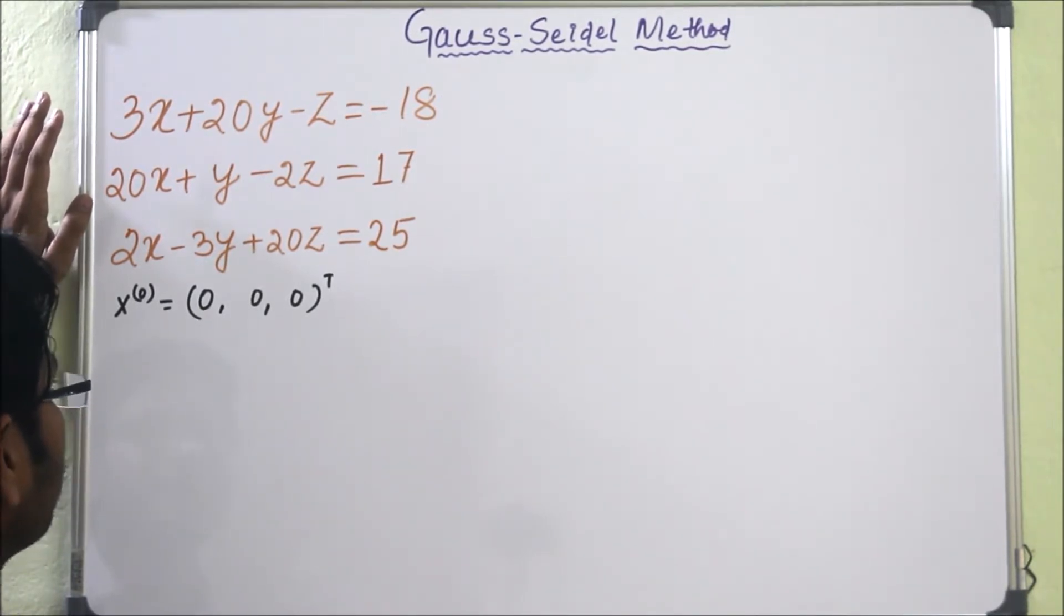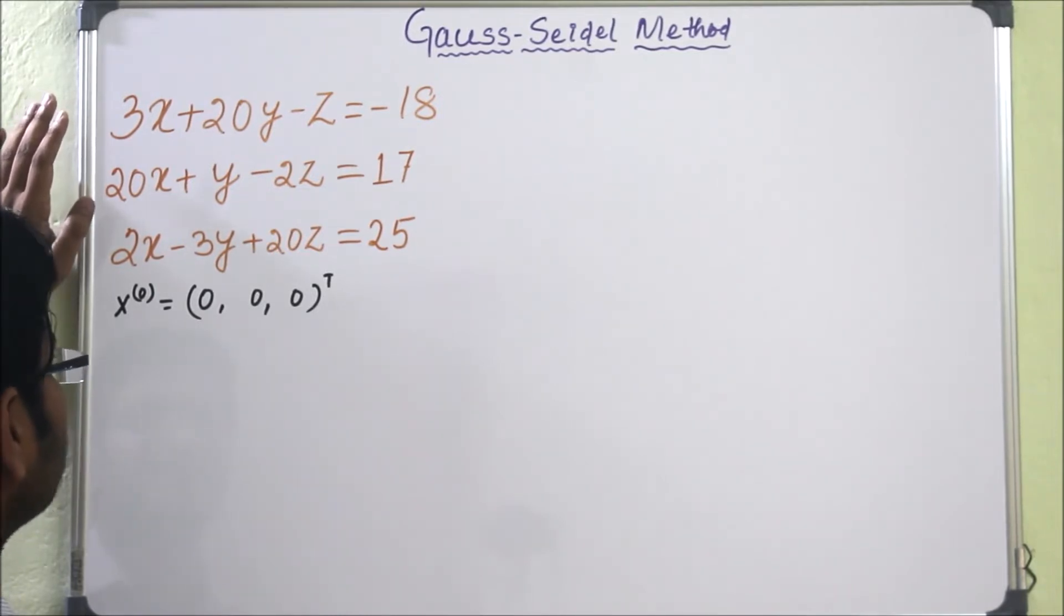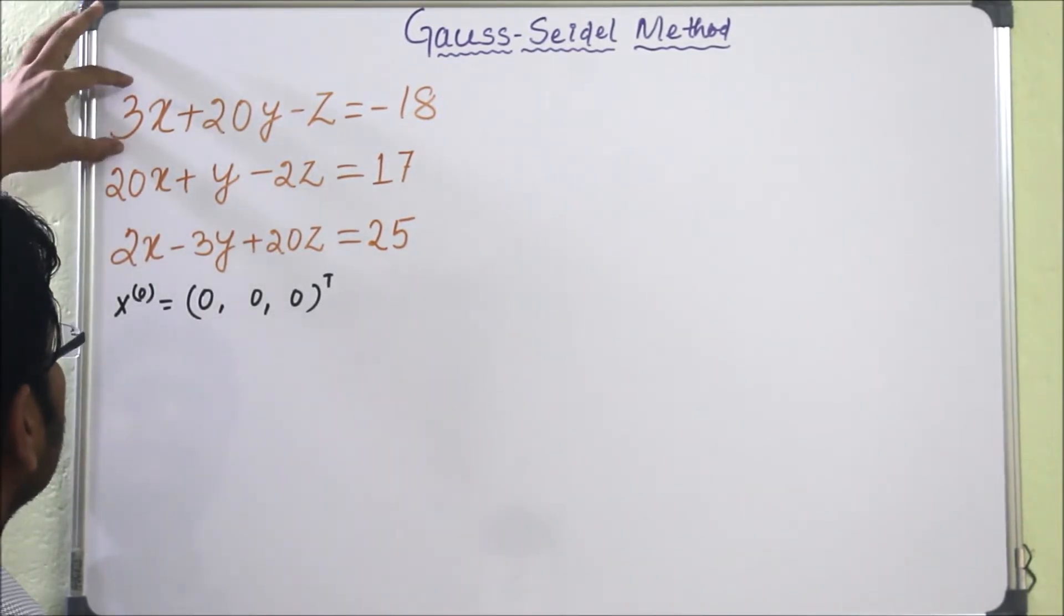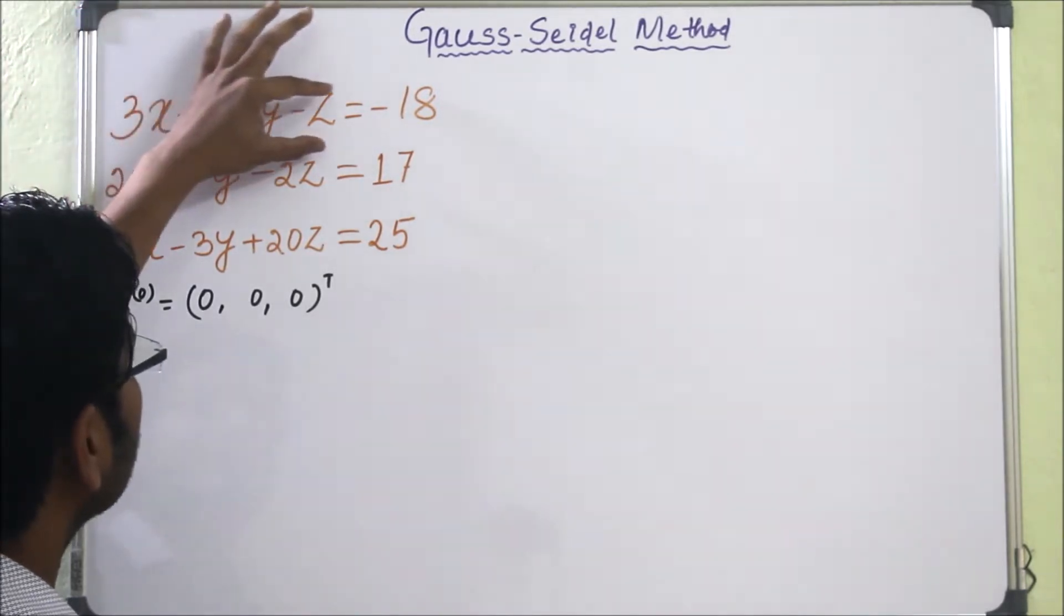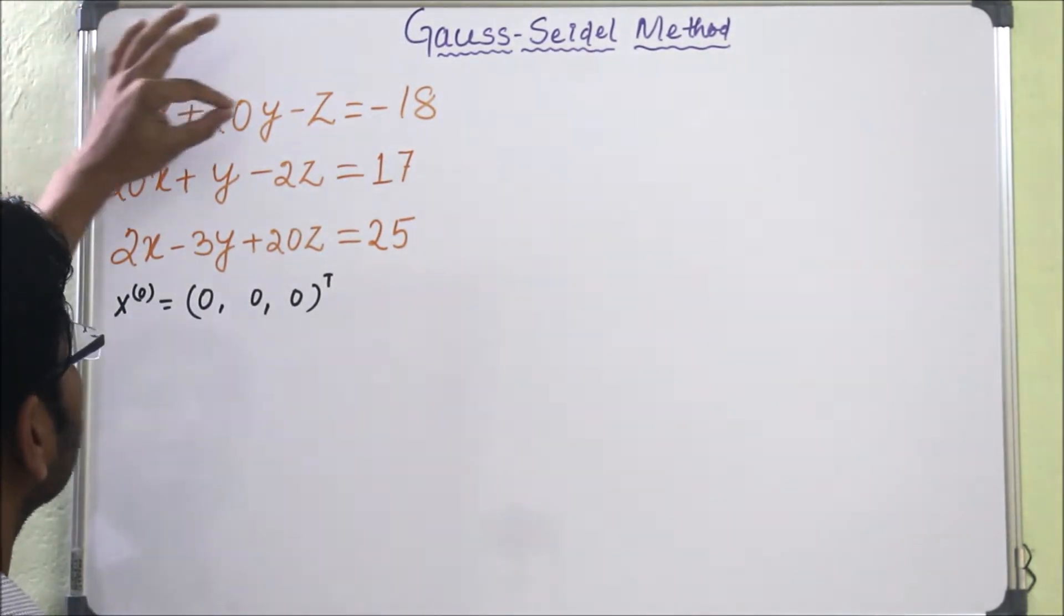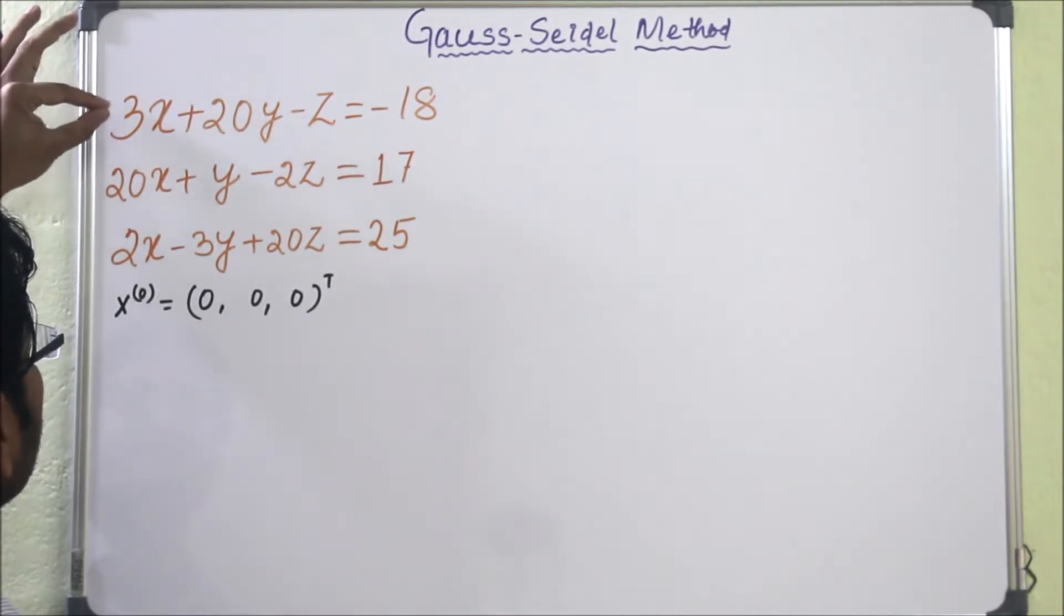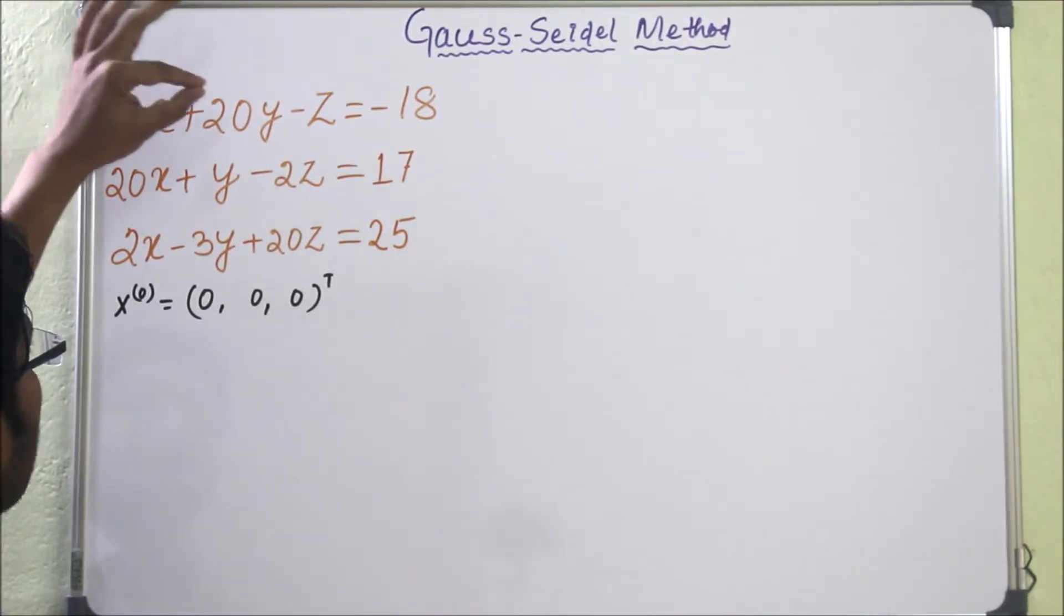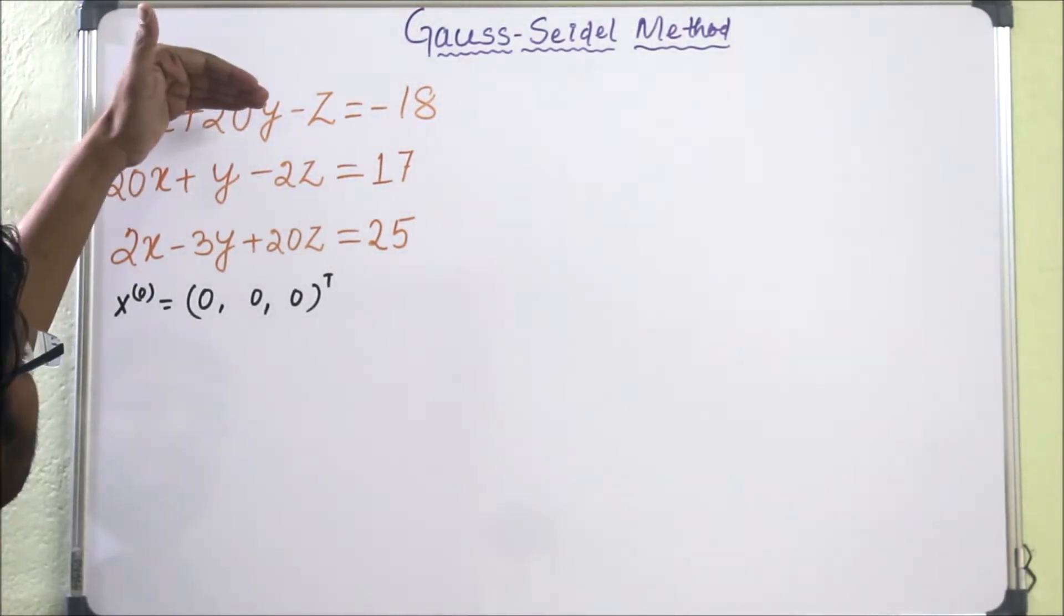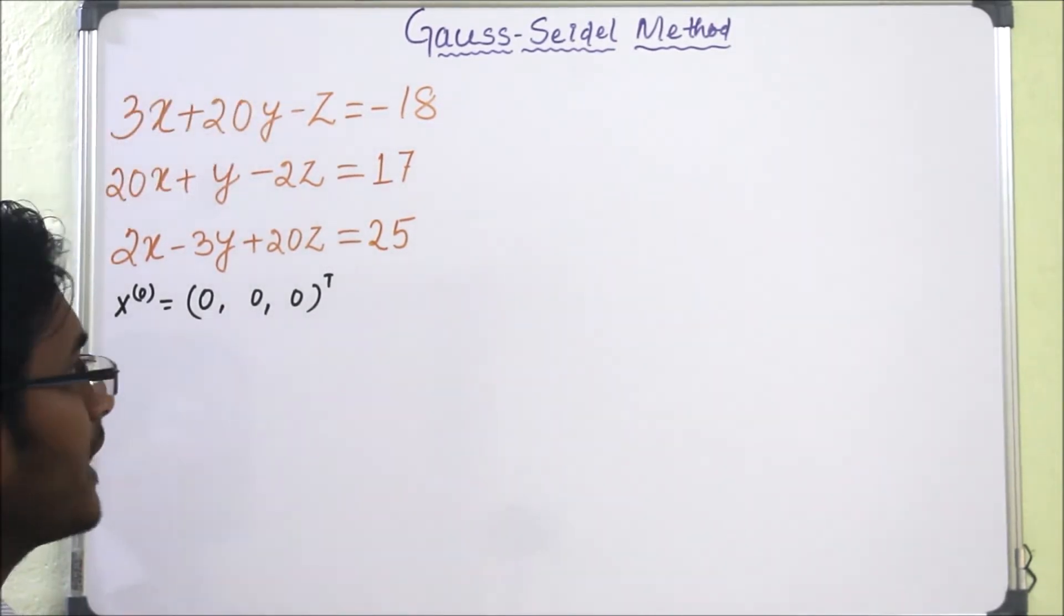How to check diagonal dominance? The diagonal dominant form tells that our diagonal entry, so first diagonal entry is 3. The absolute value of the diagonal entry should be greater than or equal to the sum of absolute values of all other elements in that row.